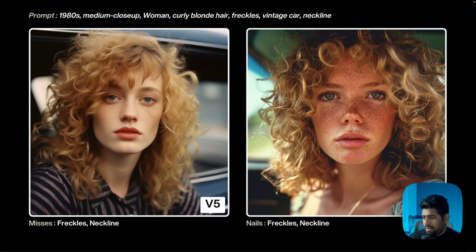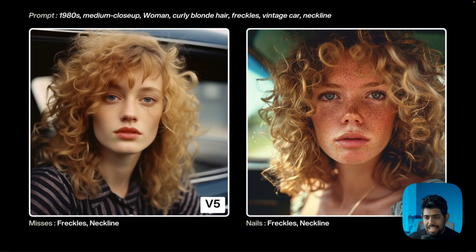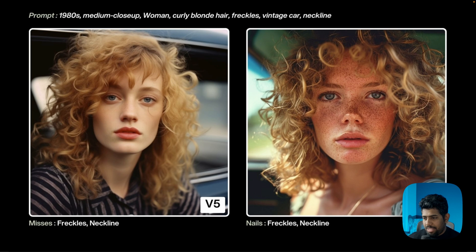Let's compare v5 and v6. Here's an example where I prompted a 1980s medium close-up of a woman with curly blonde hair, freckles, vintage car, and neckline. Both v5 and v6 gave really good images, but v5 missed the freckles and neckline. In v6, the freckles and neckline are there, and the photo is way more realistic and sharper. When it comes to actually nailing the prompt, v6 clearly wins.